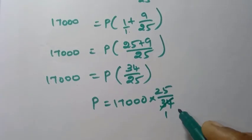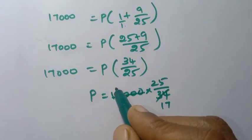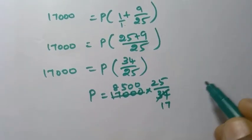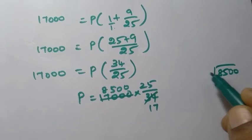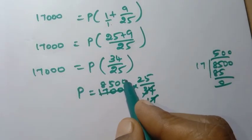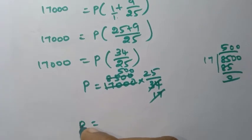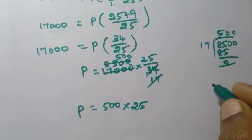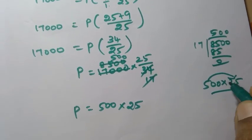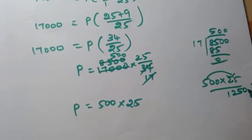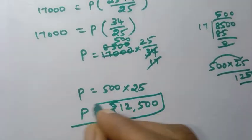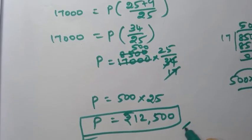Calculating 500 into 25: 5 times 25 = 125, so 500 into 25 = 12,500. Therefore the principal amount is Rs.12,500. This is the answer. Next, objective type questions.